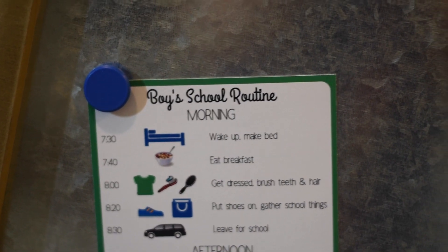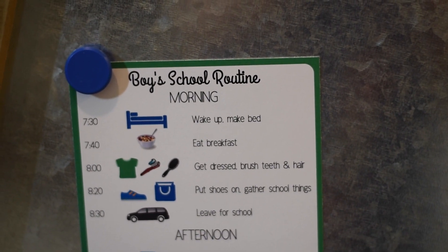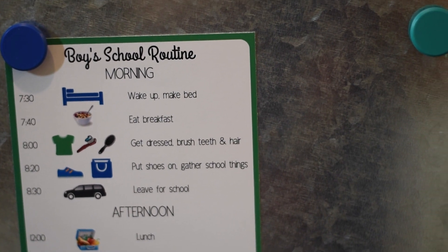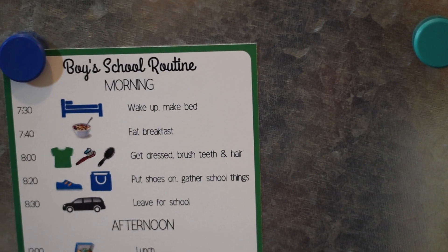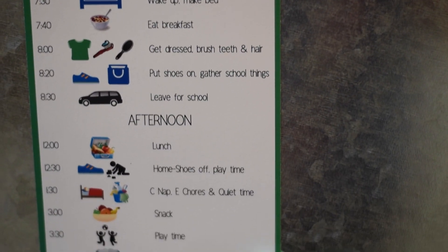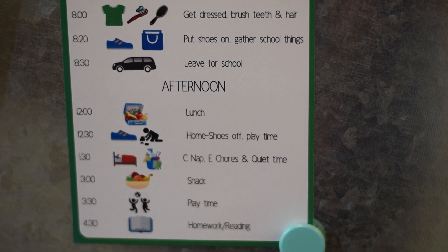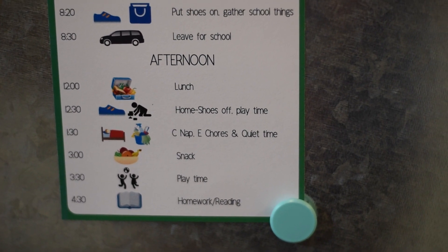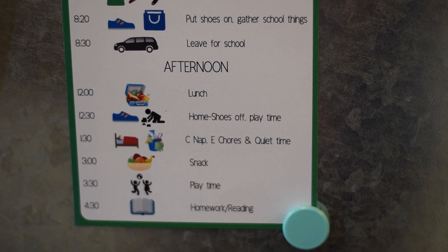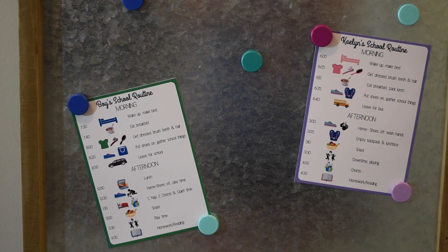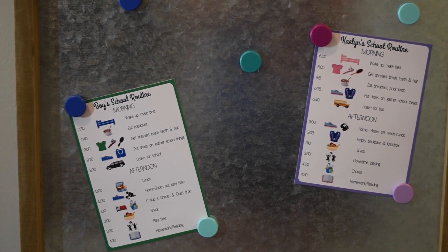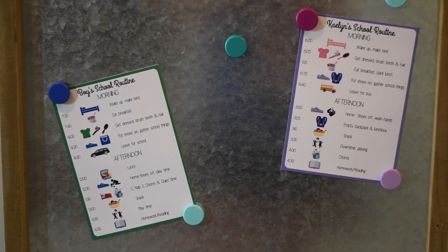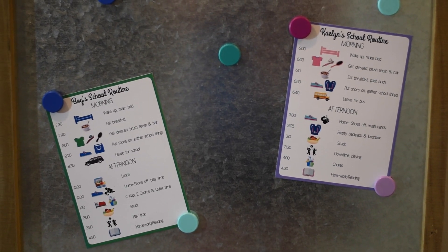The boys' routine is up here as well. Theirs is a little bit different and since they can't read yet, the pictures help them. It's basically the same type of stuff they have to do. Their afternoon is a little different because they get out of school at noon and Colton still gets his nap — I try to get them to do quiet time. These are just up there for their reference to help them keep on track and hold them more accountable.